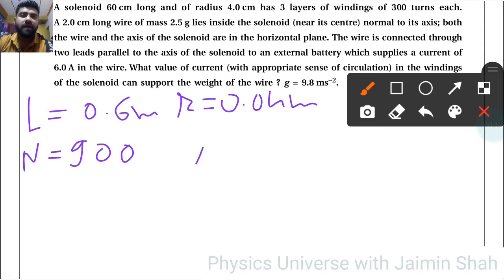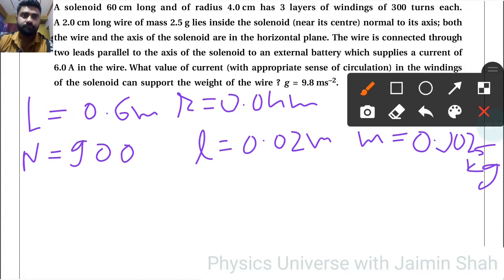A 2 centimeter long wire, so l equals 0.02 meters, and mass 0.0025 kilograms, lies inside the solenoid normal to its axis. Both the wire and the axis of the solenoid are in the horizontal plane.